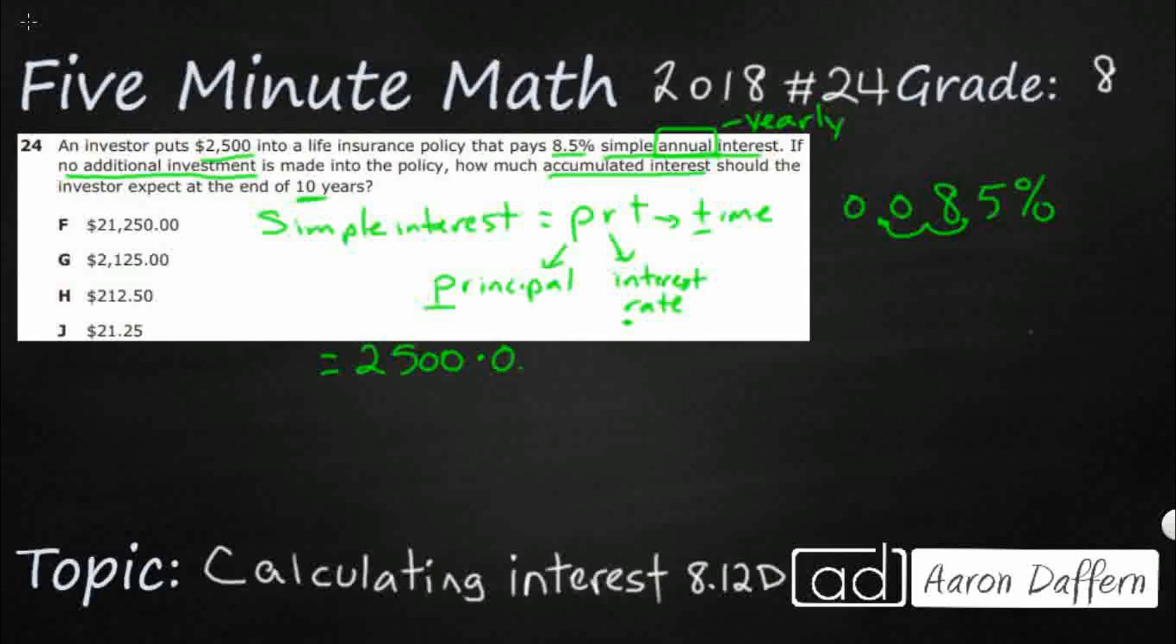So we're going to multiply that by 0.085, which is the same as 8.5%, and we're going to multiply that by the timeframe. So that is 10 years. So let's multiply those three things just to make sure we do it correct. Let's just multiply one thing at a time.